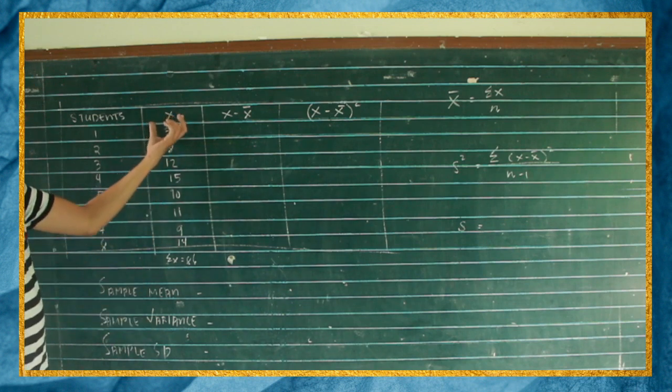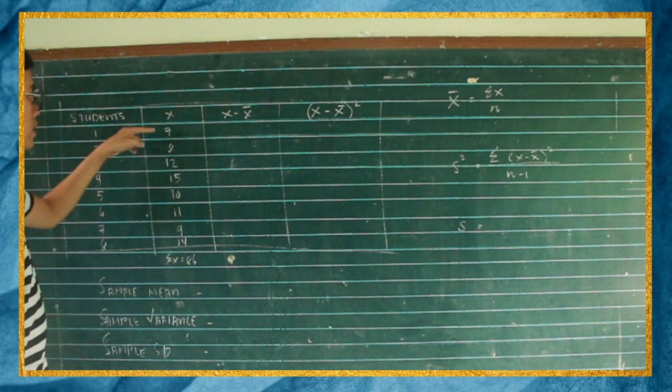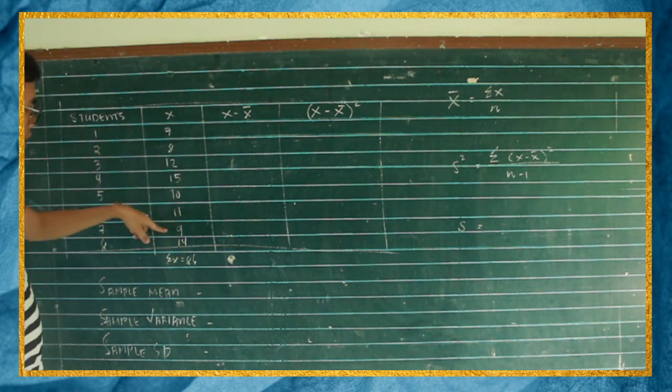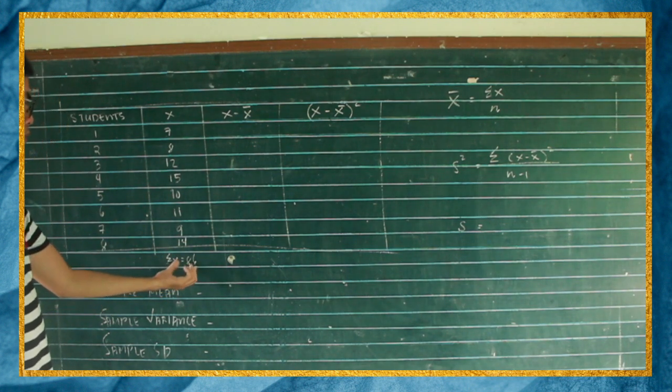So for the column x, you just have to find the summation of these scores. So if you add 7, 8, 12, 15, 10, 11, and 9, 14, so the sum is 86. Sabihin, summation of x is equal to 86.